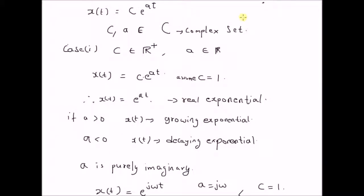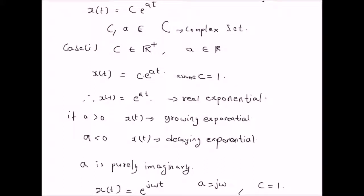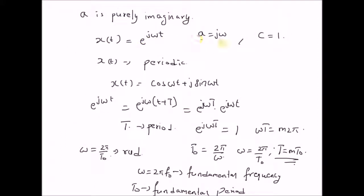Thus, to summarize, there are three possible cases for a complex exponential. The first case is when the coefficient a is purely real — the signal is either a growing or decaying exponential based on the sign of a. The second case is when a is purely imaginary — in this case x(t) is a sinusoid signal: when a equals jω, x(t) equals e^(jωt), which is cos(ωt) plus j·sin(ωt).